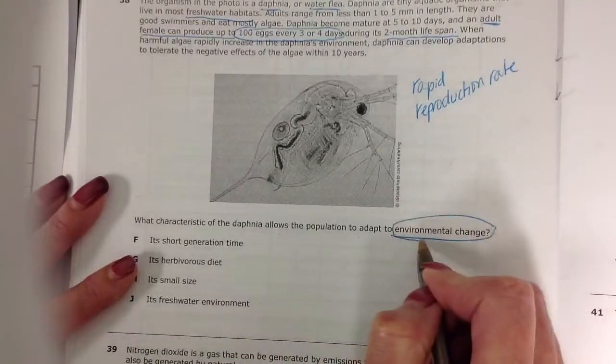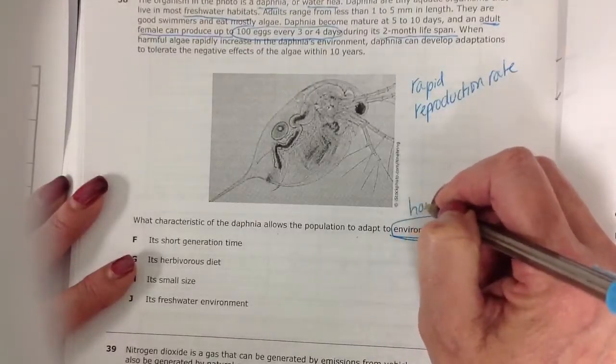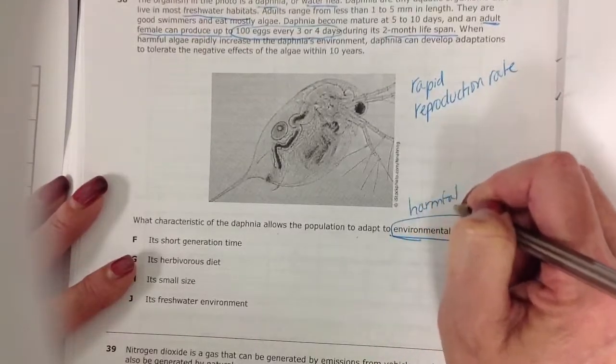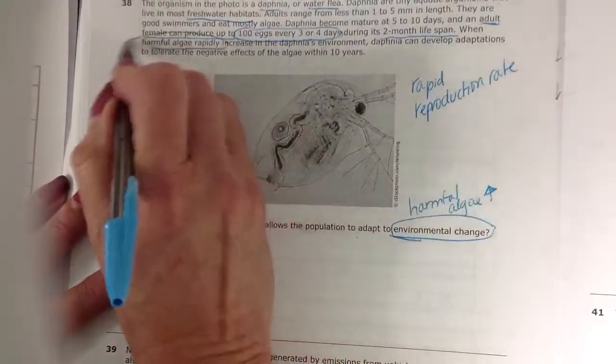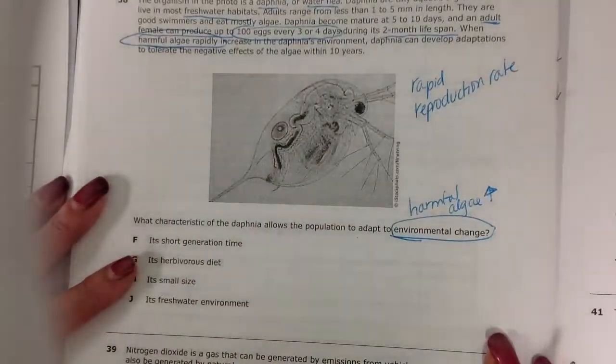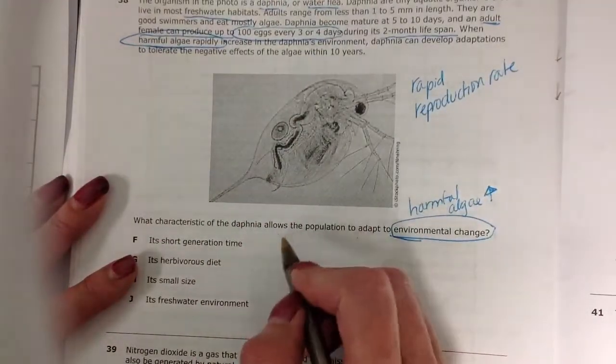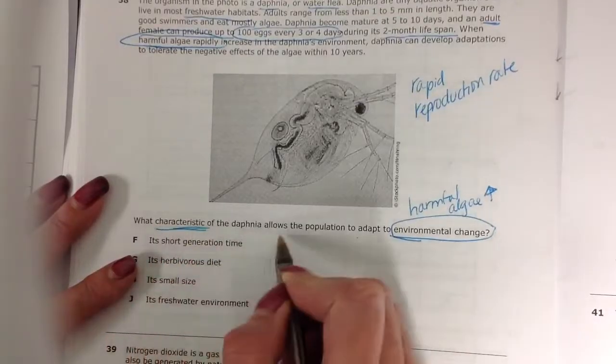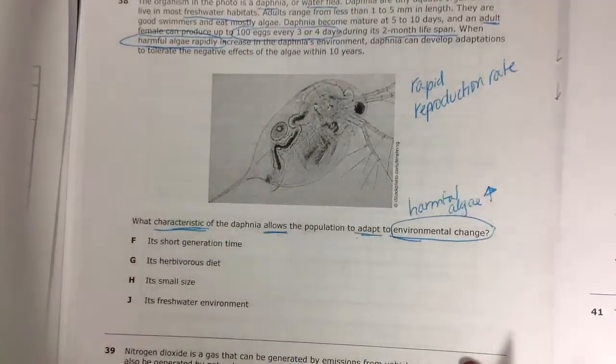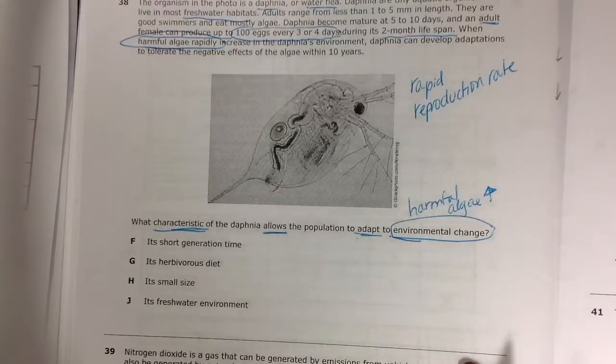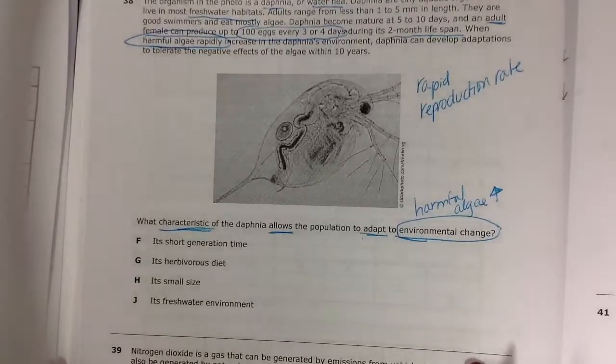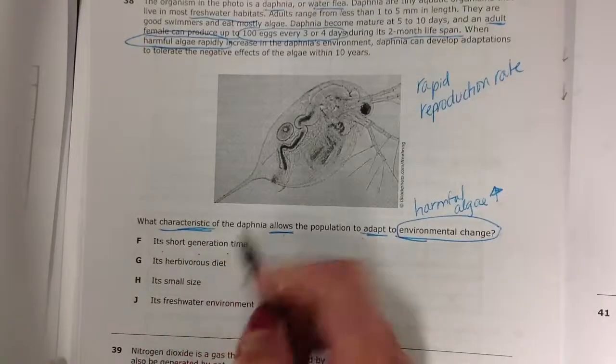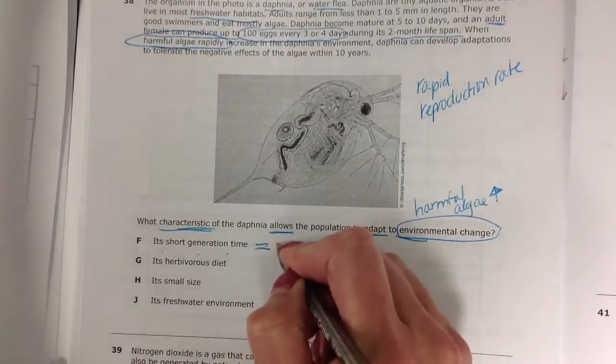So the environmental change they're referring to is this harmful algae increase. So that is an environmental change. And what characteristic allows them to adapt. Now, adaptation is linked to a variety of factors. One of them might include being able to reproduce so quickly. So let's see what our answer choices are. It's short generation time. That means it reproduces rapidly.